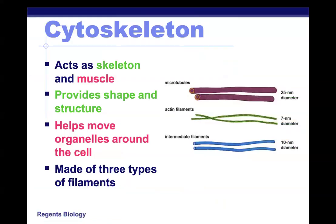Two additional structures are worth knowing: the cytoskeleton, which is a long connected network of protein fibers acting as a skeleton and muscles that provide shape, structure, and help move organelles around the cell. The AP exam won't require you to describe the differences between the fiber types in detail, but I'm including their names so you'll recognize them if you see them mentioned.